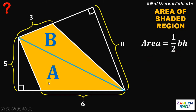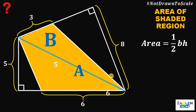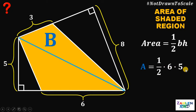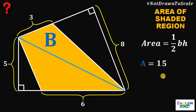Looking at region A, we can see that the base of this triangle must be 6, and its height must be 5. Therefore, the area of region A must be equal to 1 half times 6 times 5. Now, 6 times 5 is 30, divided by 2 gives us 15. So the area of region A must be 15 square units.